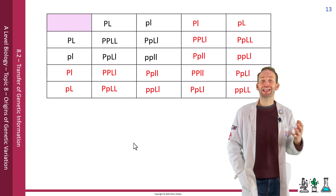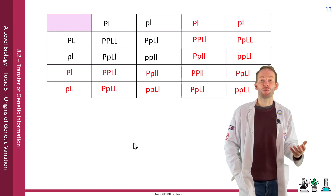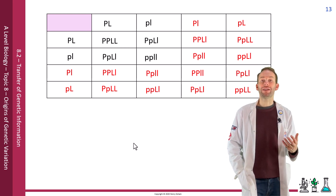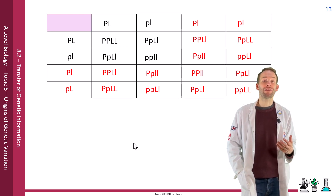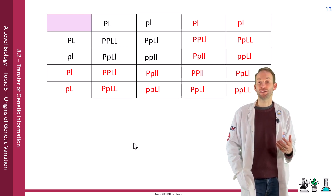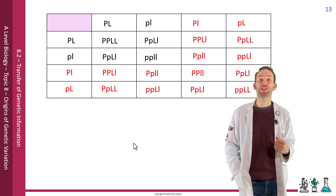So we're not going to get a 9:3:3:1 ratio, and equally we're not going to get a 3:1 ratio either. We'll probably get somewhere in the middle.